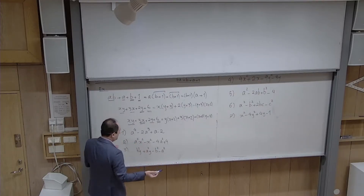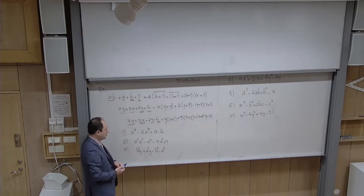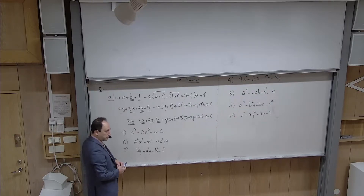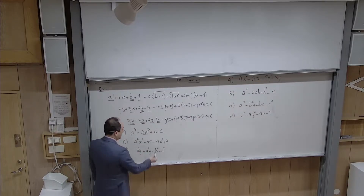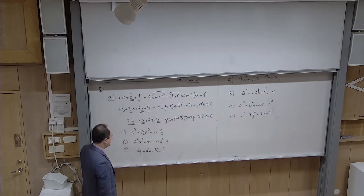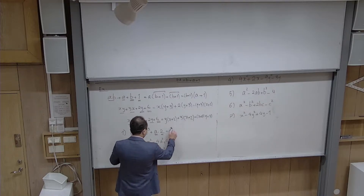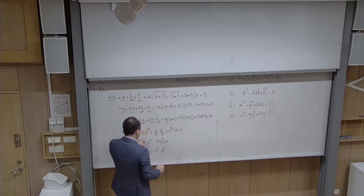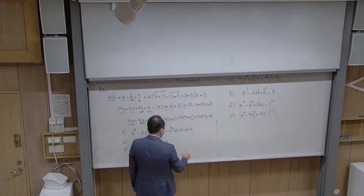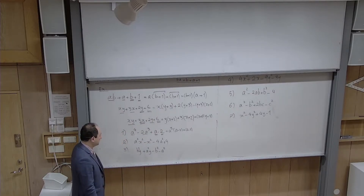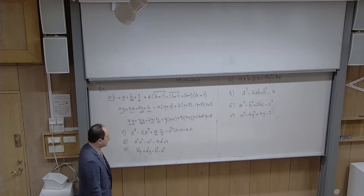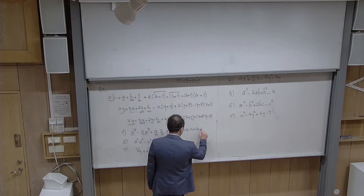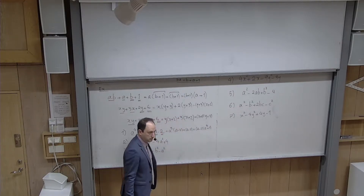For the first exercise, I hope the good grouping is clear. Taking the first two terms together, I pull a³ out, leaving a − 2, giving a³(a − 2). Then I have + (a − 2). So (a − 2) is the common factor; pulling it out gives (a − 2)(a³ + 1). If you group it the other way — taking the outer terms together — you can pull just one a out, giving a(a³ + 1), and from the middle pair pull (a − 2) out, leaving (a³ + 1). The same common factor emerges.